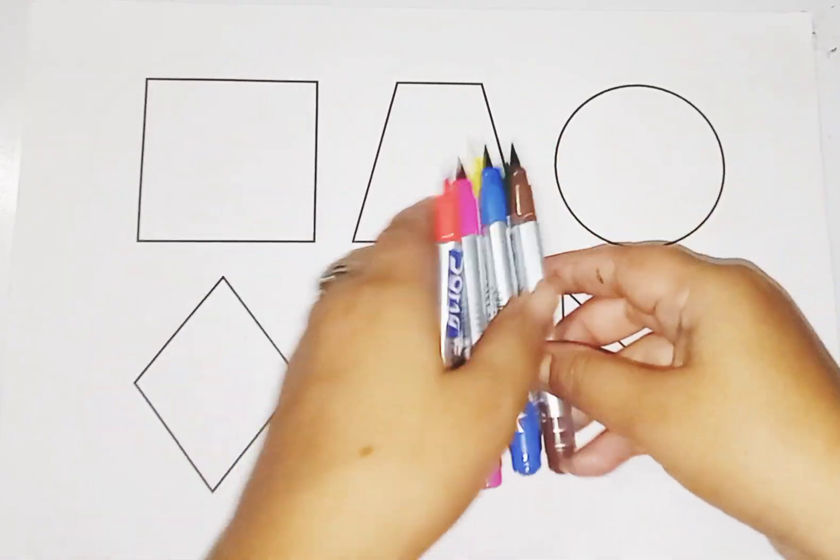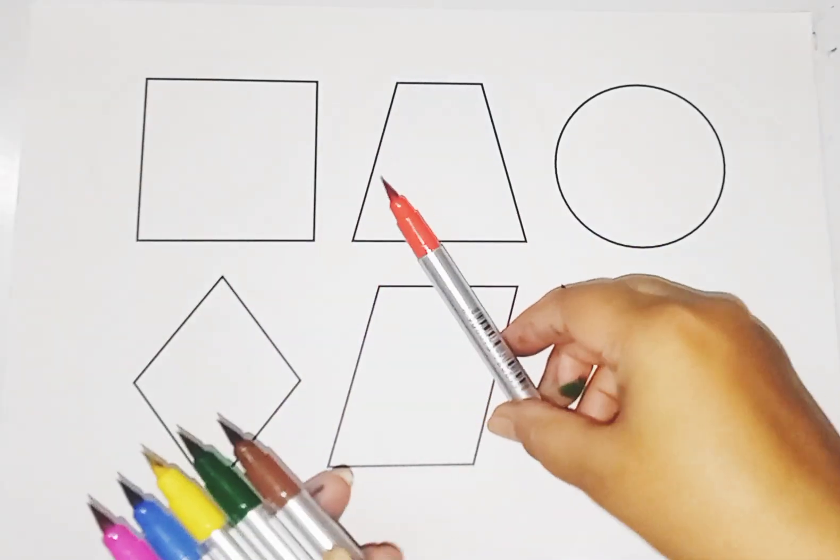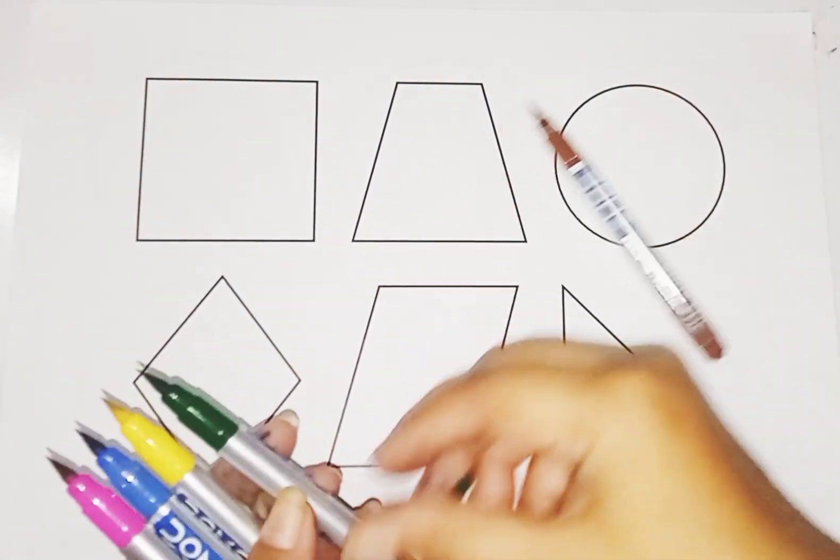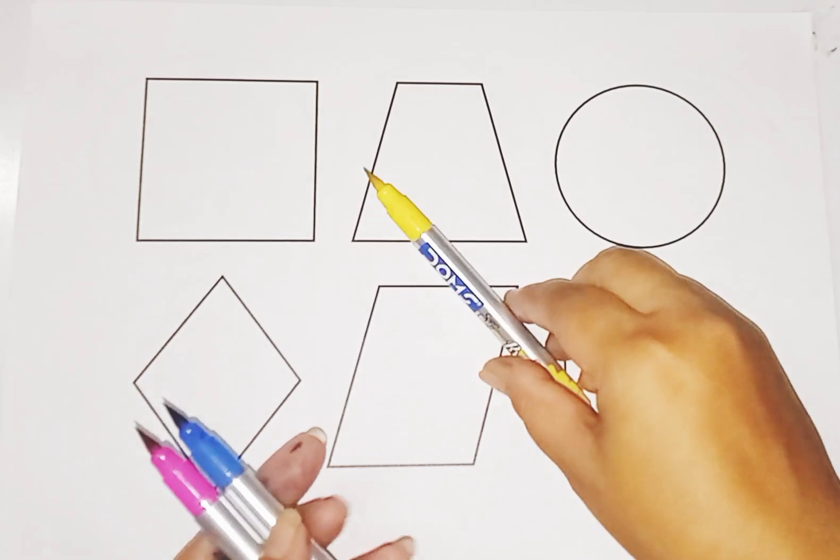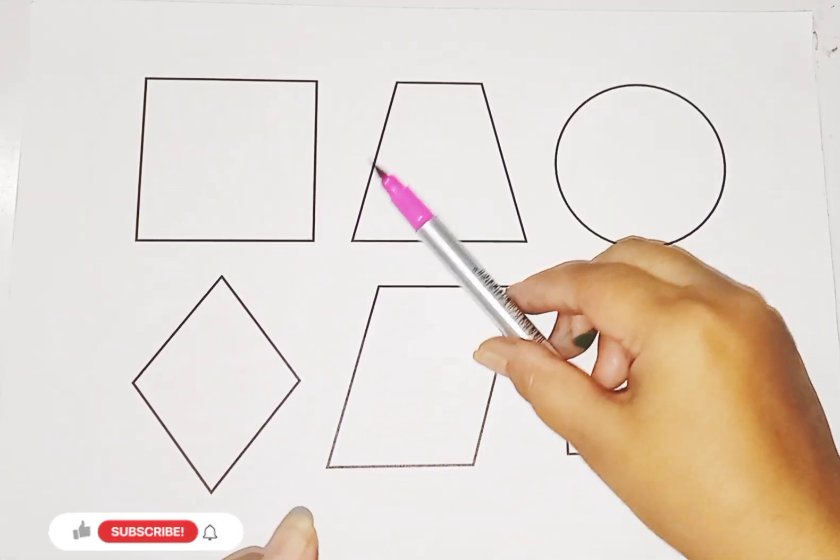These are colors. Let's learn some colors name. This is red color, brown color, green color, yellow color, blue color and this one is pink color.